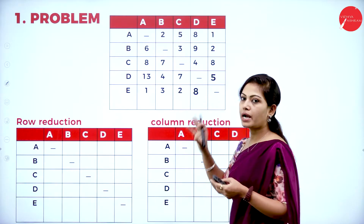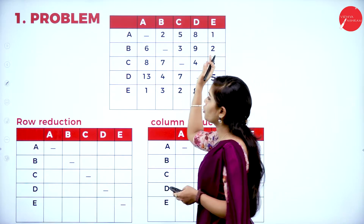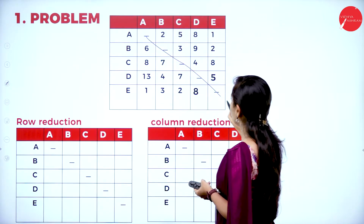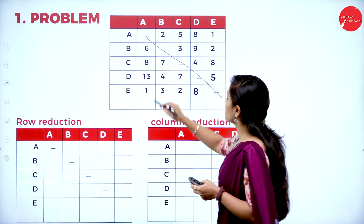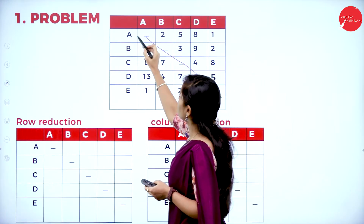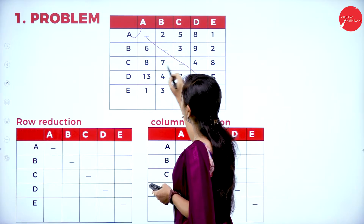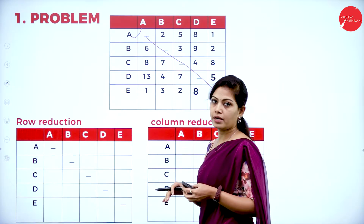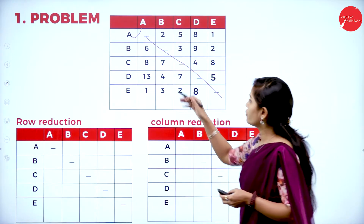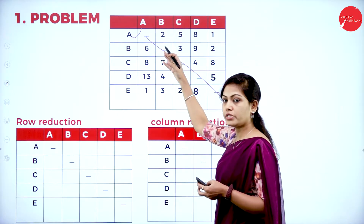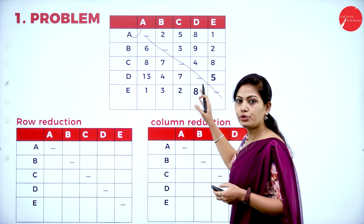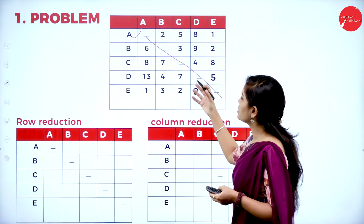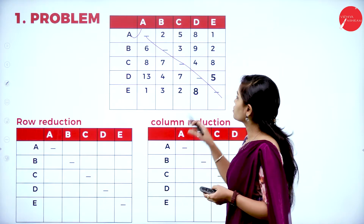For the first problem, we have one matrix representation with 5 rows and 5 columns. Keep in mind all the diagonal values are infinity because the travelling salesman can't travel from A to A, B to B, C to C, D to D, and E to E — he can't travel to the same position. So all the diagonal matrix values are infinity, zero, or sometimes they will give a dash.